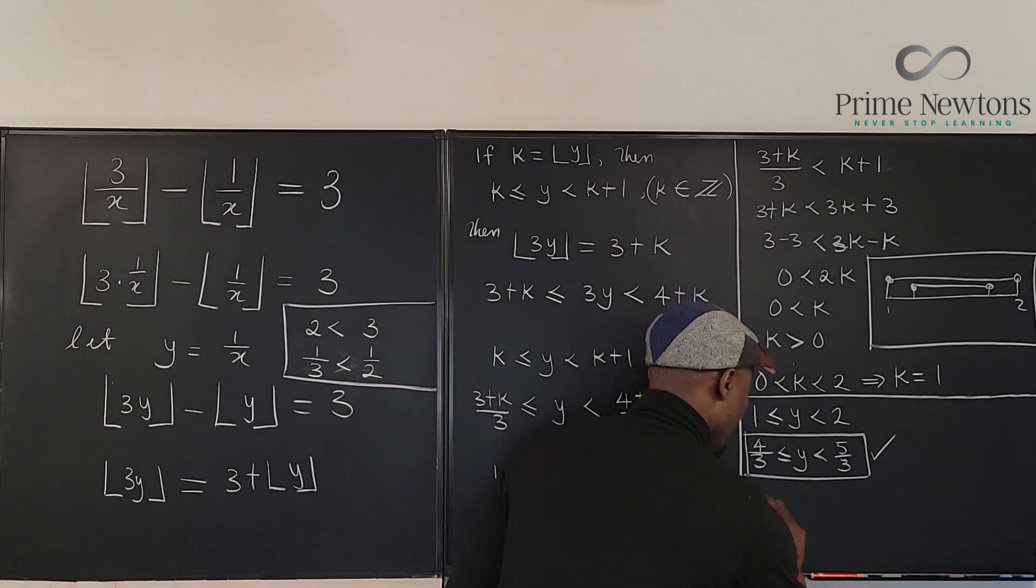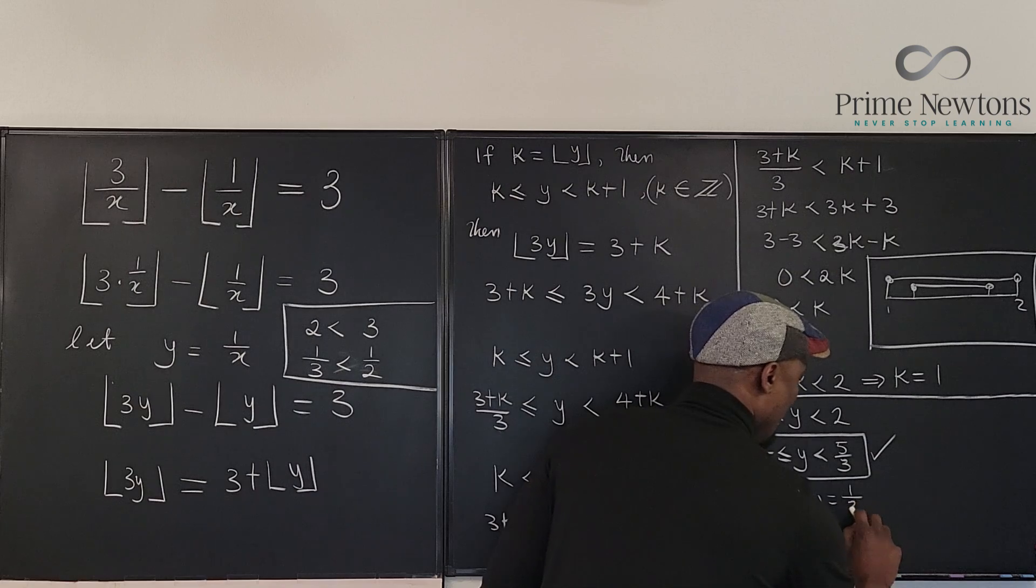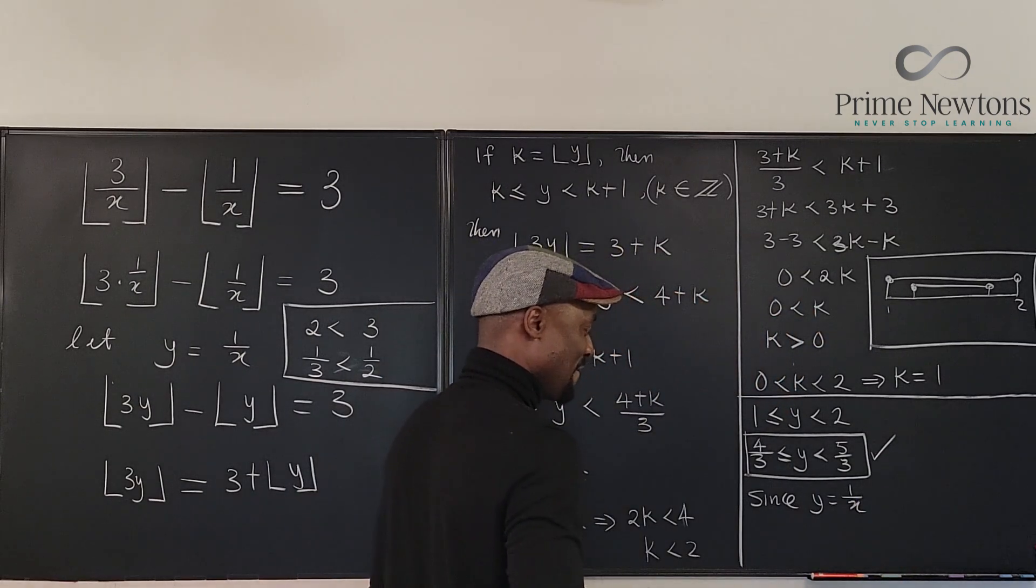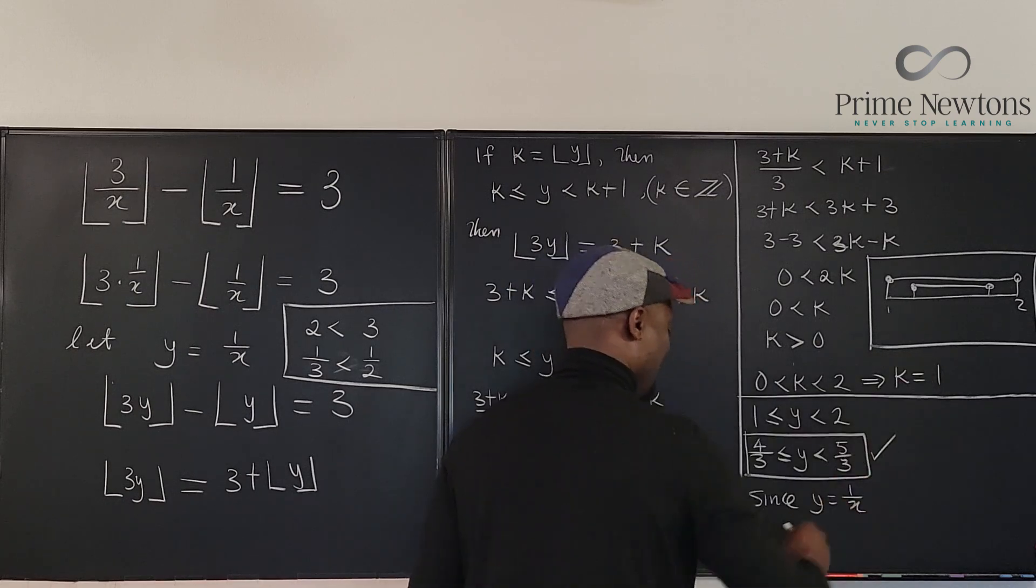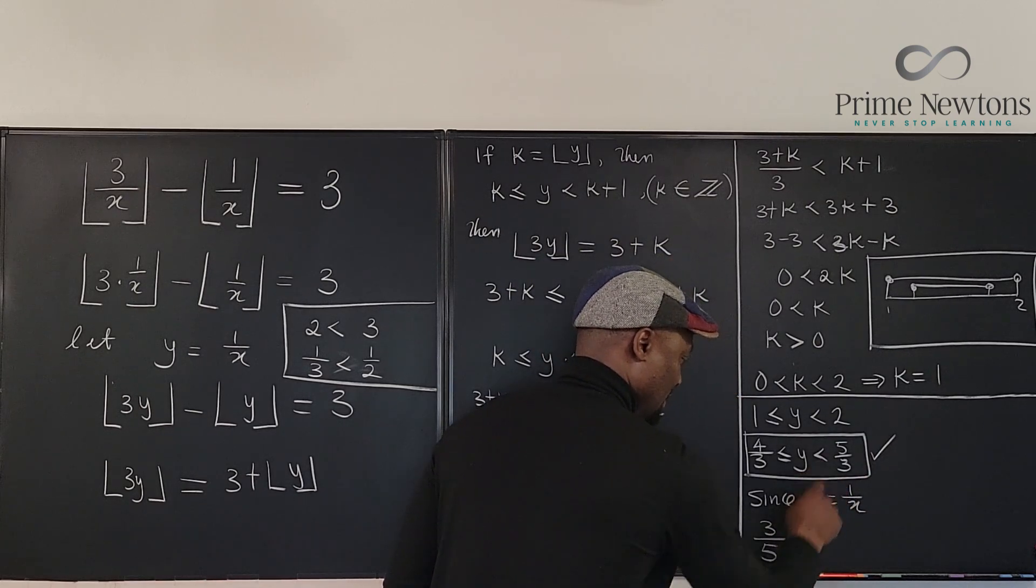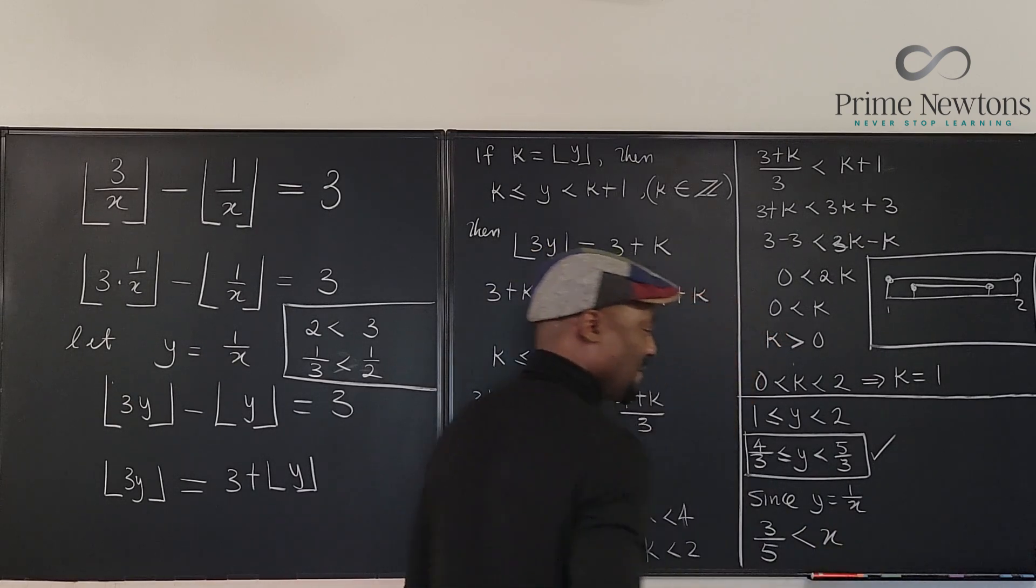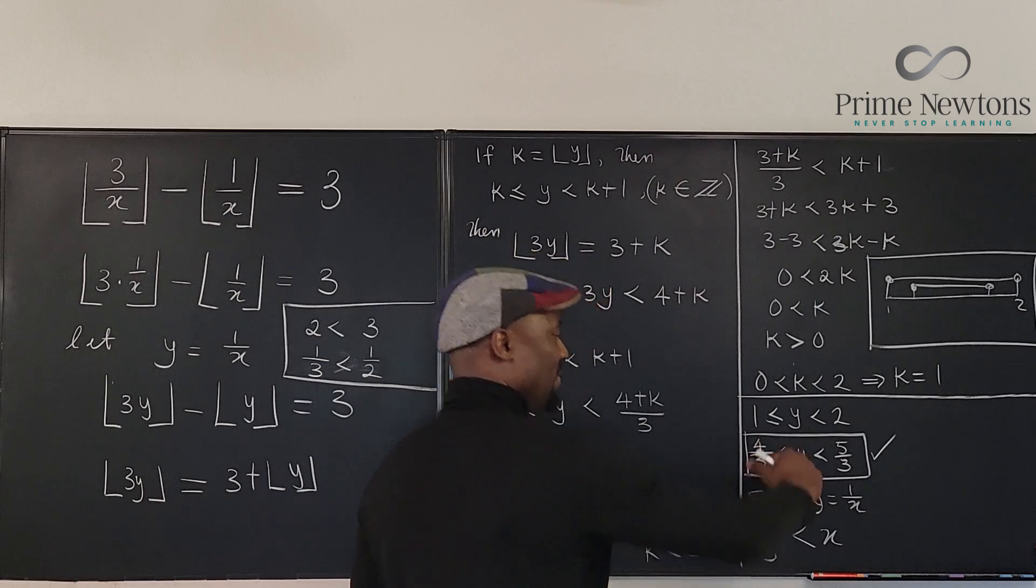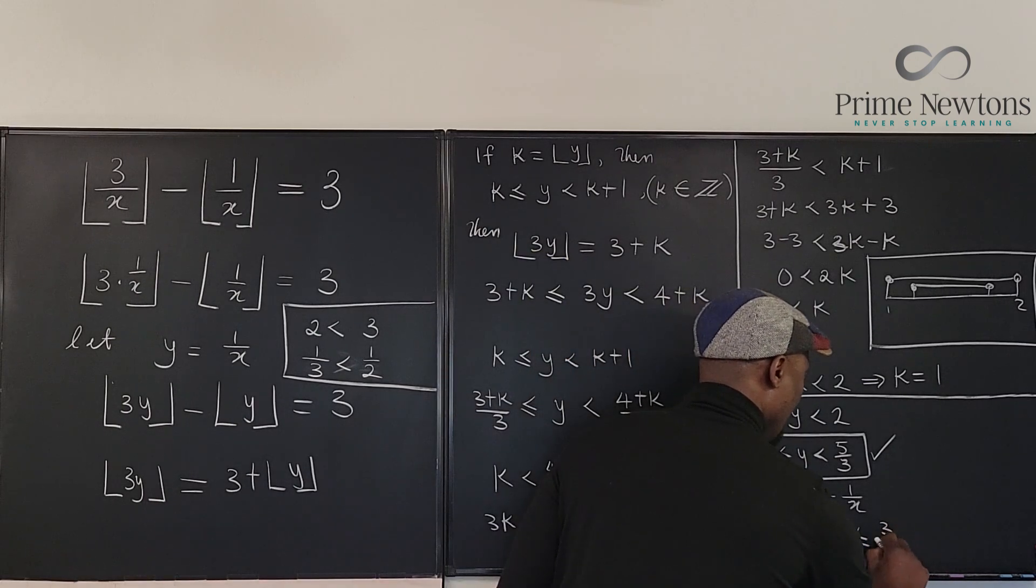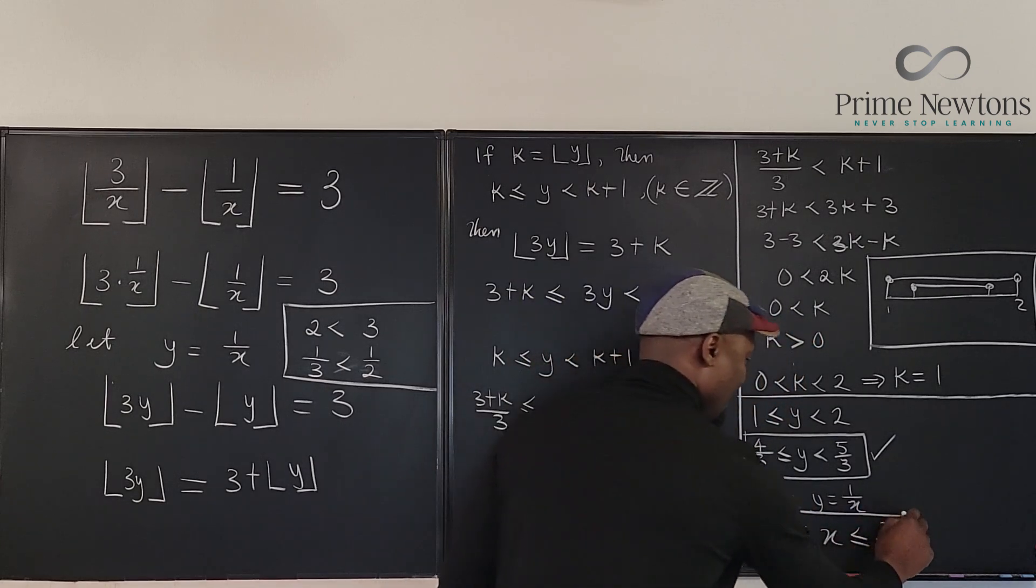Okay, so since y equals 1 over x, we can conclude, I'm going to put the answer here, hope you see it, that if you flip this side, 3 over 5, you keep the same kind of sign is less than y, or no, less than x, and x, you flip this one, is going to become less than or equal to 3 over 4. Now this is the solution.